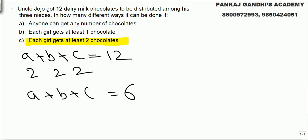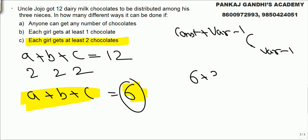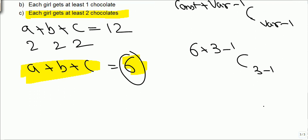What we know is, so I need not tell you again. Now constant is six. Variable is three. I believe in revising again and again. Constant plus variable minus one, C variable minus one. Now constant is six. Six plus three minus one, C three minus one.